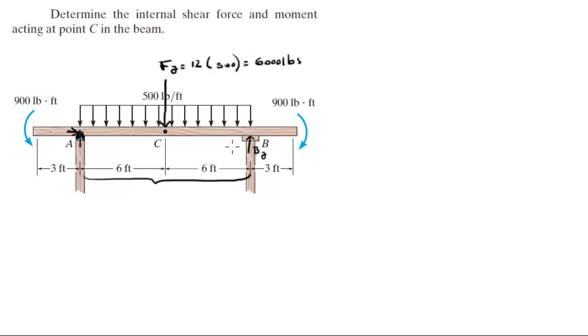Okay, that being said, the first thing I want to do is find BY. So to find BY, we're gonna do the sum of the moments at A. Assuming clockwise is positive, sum of the moments at A is equal to 0.